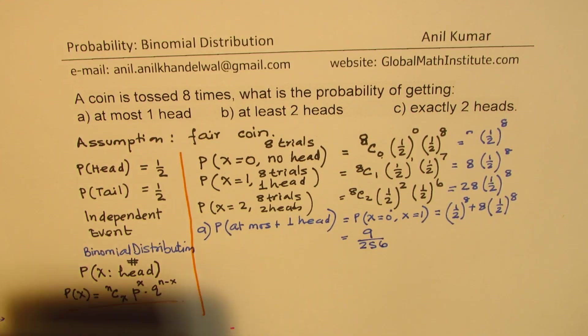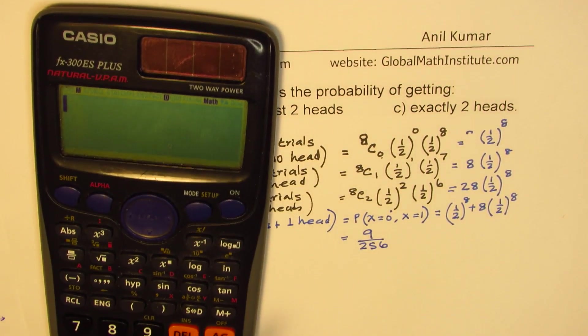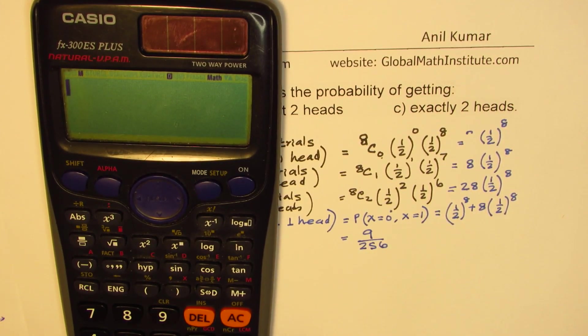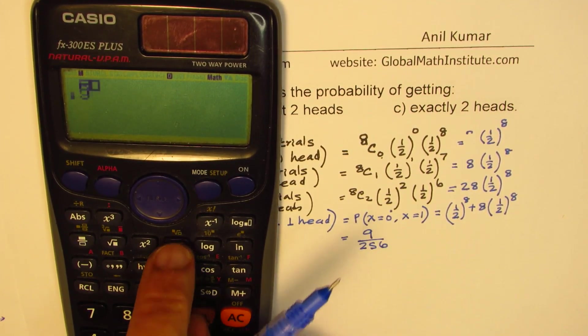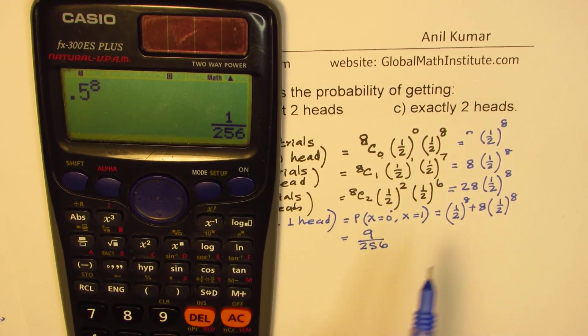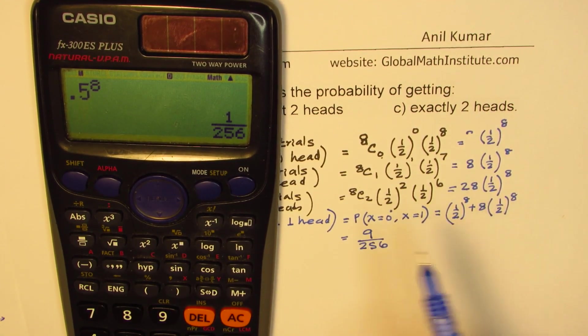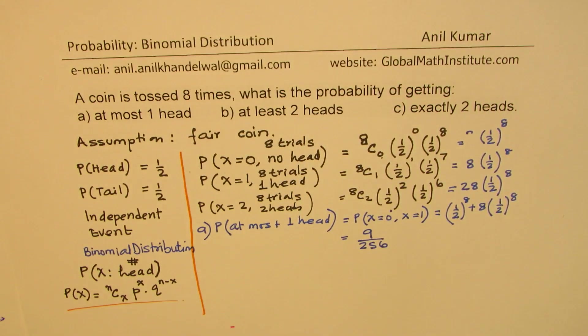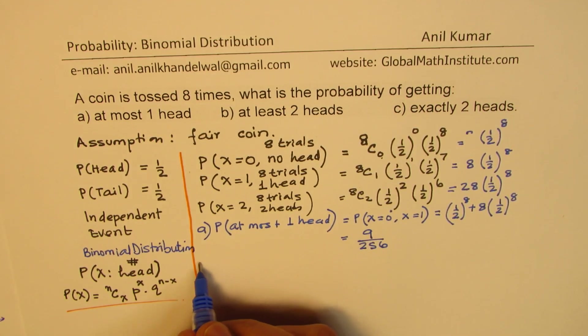So that will be our answer. You could use your calculator also. So basically we have 0.5 to the power of eight, half is 0.5, which is one over 256, and one plus eight is nine, times nine. So we get nine over 256 as answer for first part.